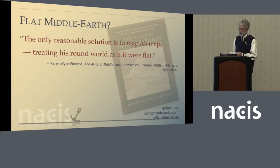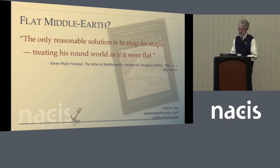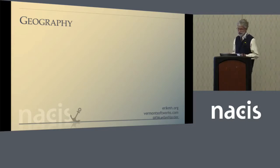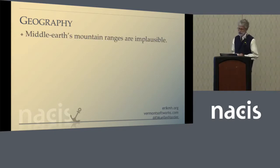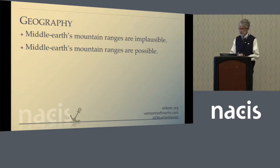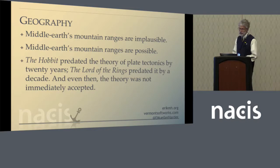In her Atlas of Middle Earth, Karen Wynne Fonstad, former director of cartographic services at the University of Wisconsin-Oshkosh, advises that the only reasonable solution is to map his maps, treating his round world as if it were flat. While we're on the topic of things I'd like to avoid during the Q&A — Tolkien's geography. It's true that Middle Earth's mountain ranges are implausible. Actual geologists have debated them, and it seems that with some effort, one can come up with scenarios that would explain most everything, even the mountain ranges. We should remember that the theory of plate tectonics was developed 10 to 20 years after Tolkien had designed Middle Earth, and even then it was not immediately accepted.